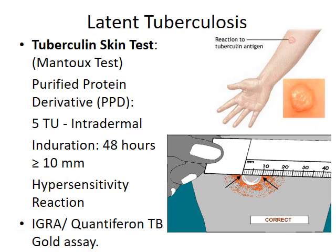The other test available for latent TB is interferon gamma release assay (IGRA), wherein highly specific tuberculosis antigens are exposed to sensitized T lymphocytes collected from suspected individuals. This exposure leads to the release of high levels of interferon gamma from the T lymphocytes, and an ELISA format is available for quantifying this.